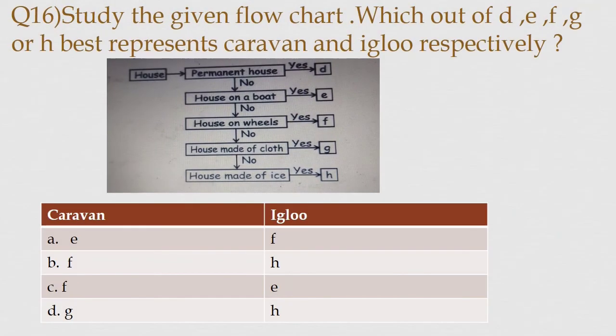Question number 16. Study the given flowchart which out of D, E, F, G or H best represents Caravan and Igloo respectively. Option A: E, F. Option B: F, H. Option C: F, E. Option D: G, H.